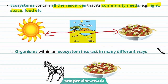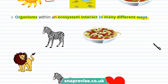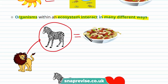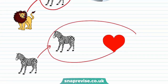Ecosystems contain organisms, and the organisms within an ecosystem interact in many different ways. For example, predators such as this lion eat other animals such as a zebra for food. Predators can also compete with each other for food. Organisms can also interact by mating within their species to produce offspring.